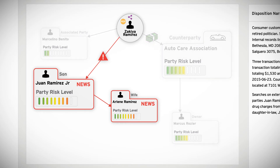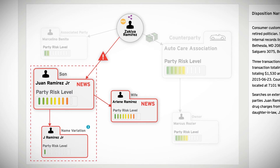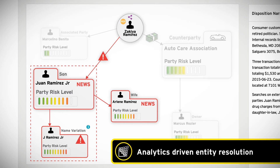In addition, the entity resolution capabilities within Cognitive Investigator are able to identify customers and counterparties that may be attempting to mask their identity, but can be identified through similarities across addresses, phone numbers, relationships, or a multitude of other available data points.